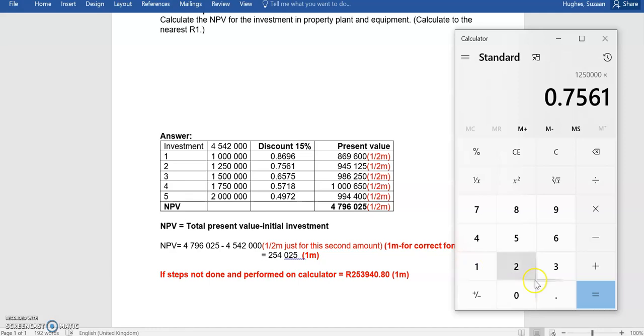I'm sure you can see at this point why having a little table helps just to make sure that you're multiplying the correct discount rate by the correct cash inflow number. And that gives us a present value of 945,125.